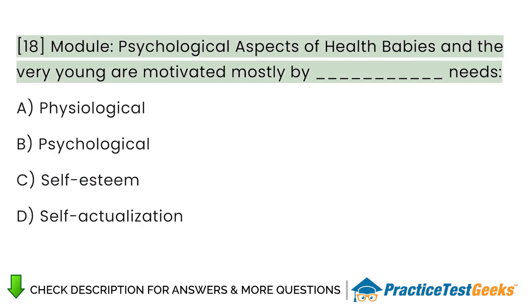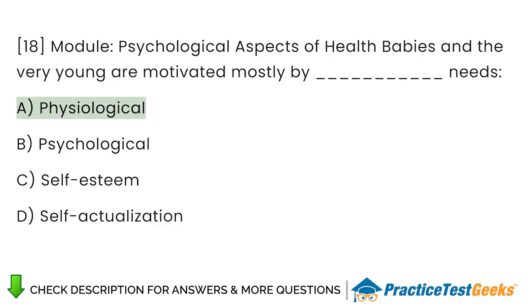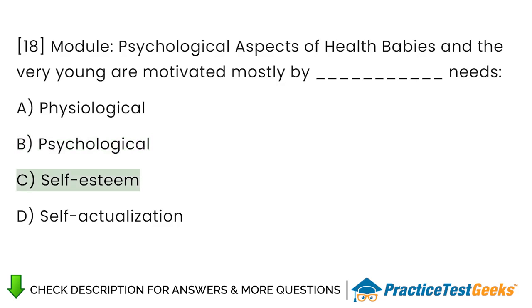Module: Psychological Aspects of Health. Babies and the very young are motivated mostly by what needs? A. Physiological. B. Psychological. C. Self-esteem. D. Self-actualization.